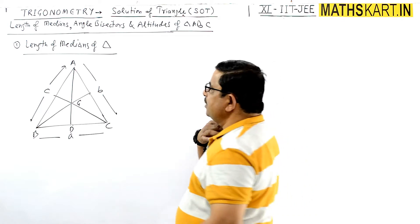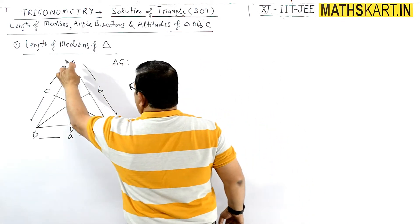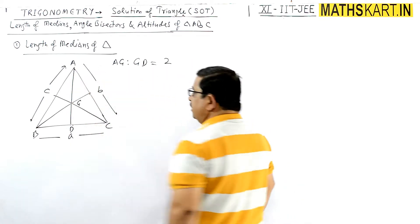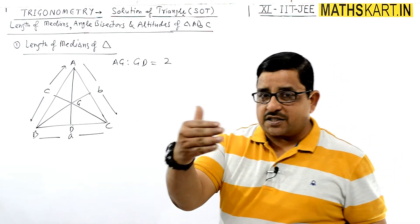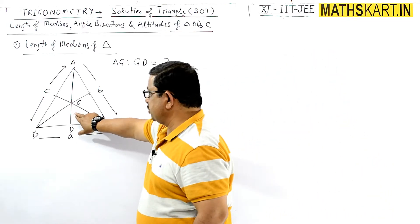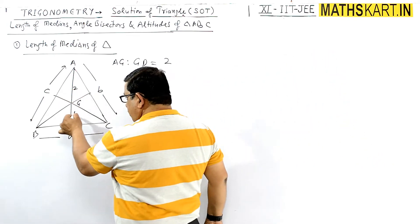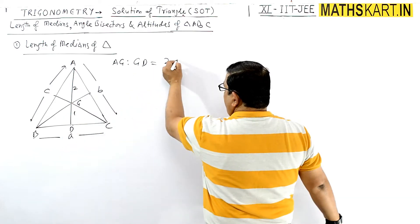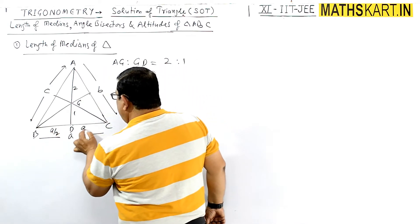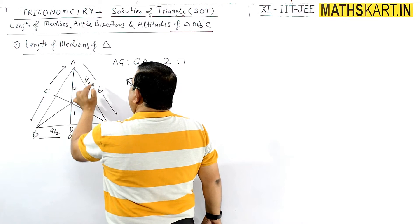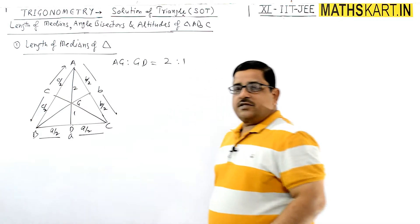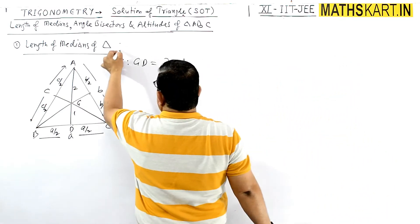The centroid divides each median in the ratio AG:GD = 2:1. The vertex side has two parts and the opposite end GD has one part, so this ratio is always 2:1. Looking at the midpoint segments, the half-lengths are A/2, A/2, B/2, B/2, and C/2, C/2 respectively.